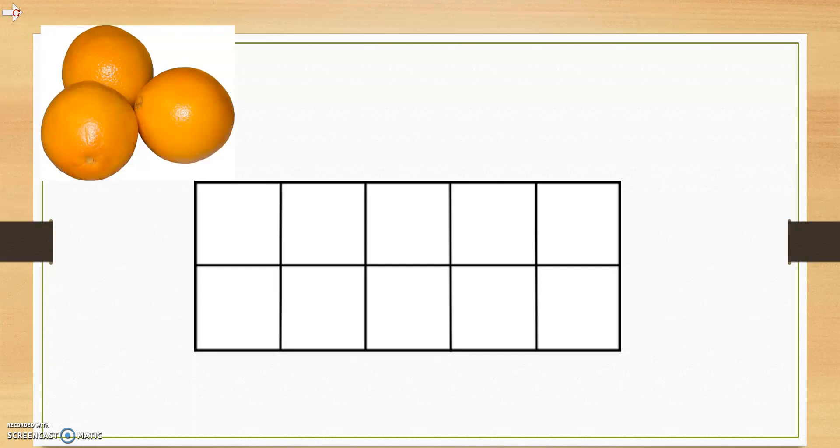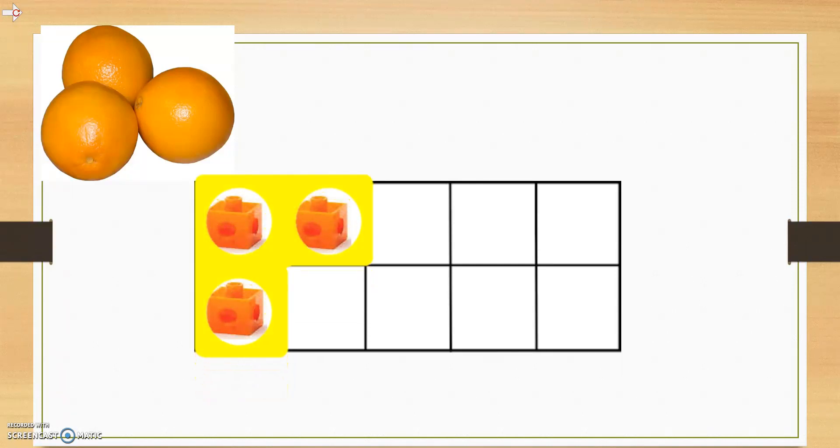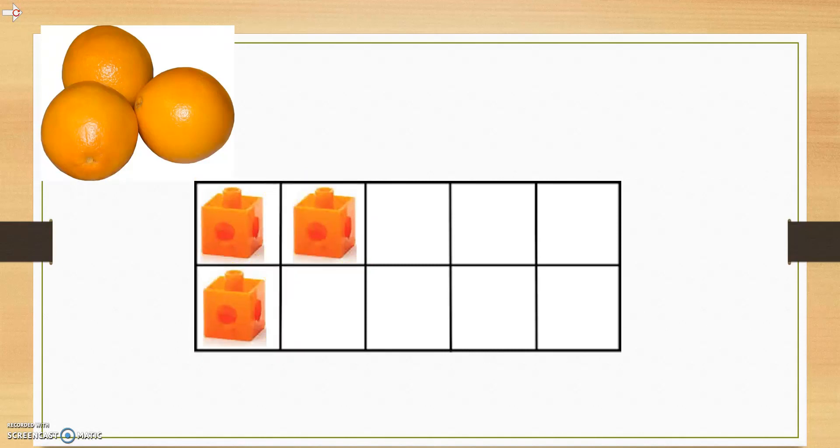For example, if we look at our 10 frame and we have our 3 cubes in it, we could also use our numericon to represent the value. Here we see the numericon showing us that there are 3 cubes and that there are 3 oranges. We can also use different pieces of numericon to make up the number 3. For example, we could use 2 and 1.